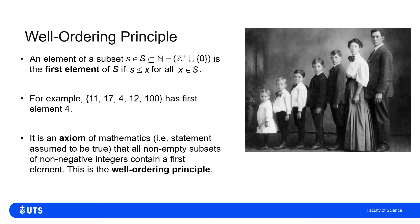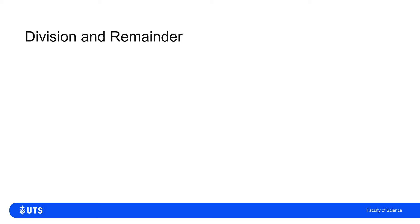This is the well-ordering principle, and it's one of the axioms of mathematics — one of the things we take as true without proof. The well-ordering principle simply says that every non-empty subset of non-negative integers contains a first element. Notationally, we denote the natural numbers with capital N; here the natural numbers refer to positive integers or zero, i.e. non-negative integers.